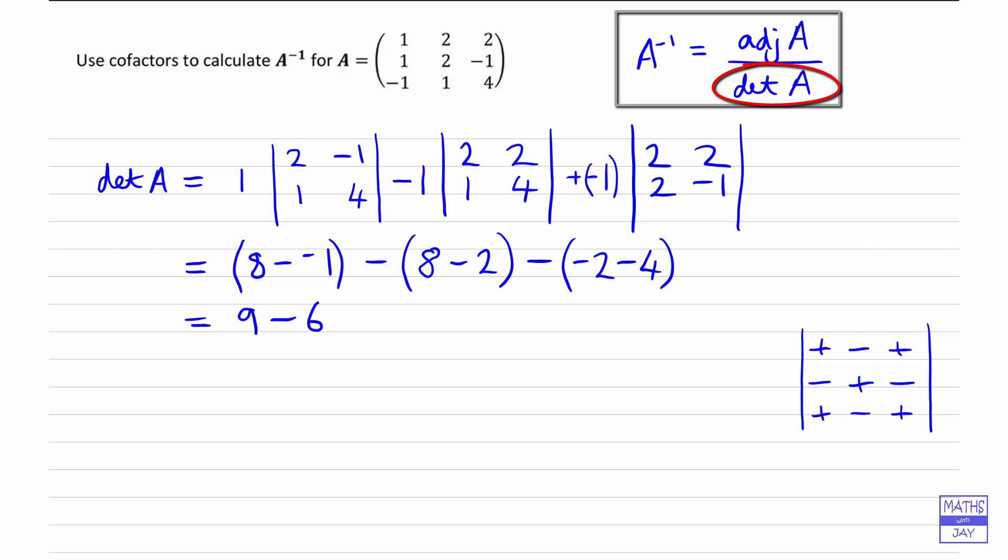So we've got 9 minus 6, minus negative 6, so plus 6. So the determinant of matrix A is 9.